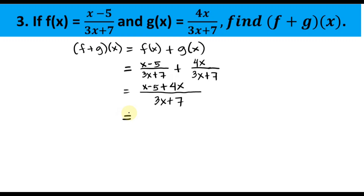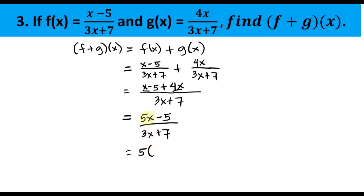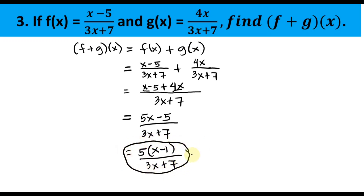Combining like terms in the numerator: x + 4x = 5x, and we keep −5. So the result is (5x − 5) / (3x + 7). Looking at the numerator, we can simplify by factoring out 5: 5(x − 1) / (3x + 7). That is the final simplified answer for the sum of the given functions.